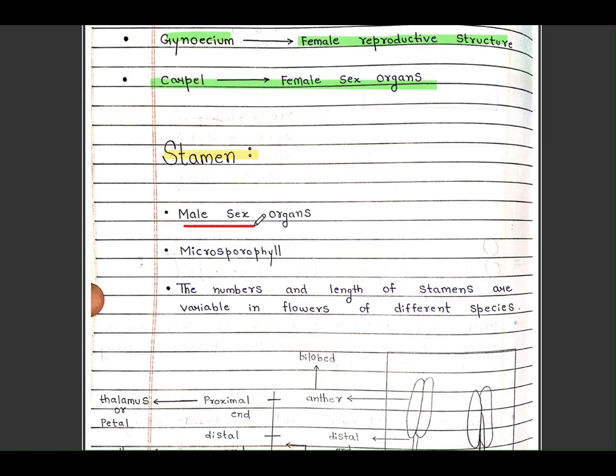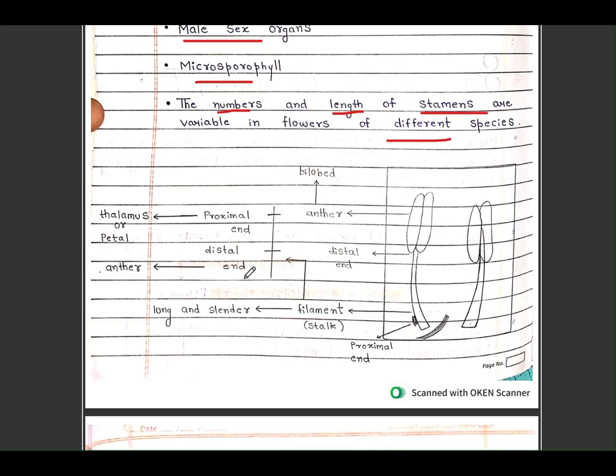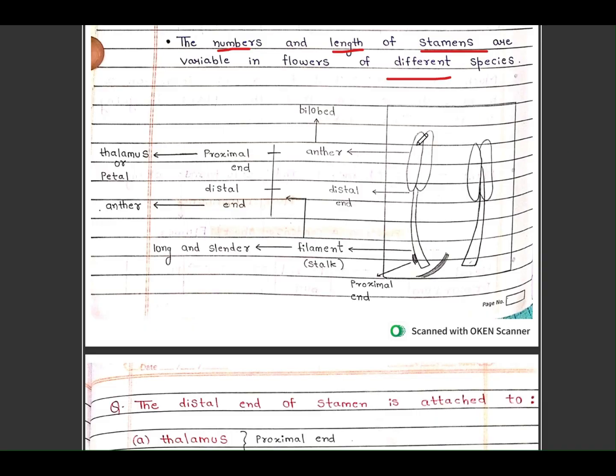Stamen is the male sex organ, also called microsporophyll. The number and length of stamens are variable in flowers of different species. You can see here, it is the proximal end, it is the filament, it is the distal end, the anther. Anther is called the distal end and petal or thalamus is the proximal end.